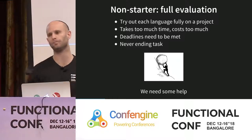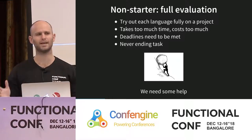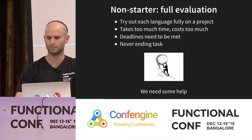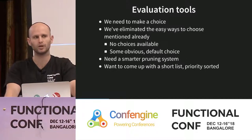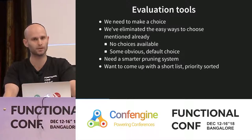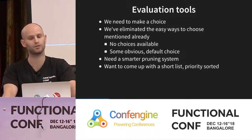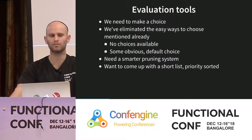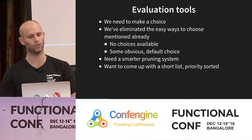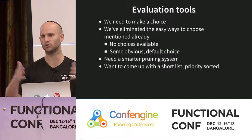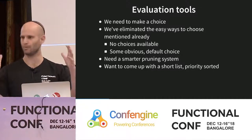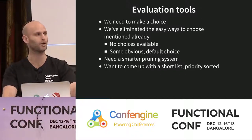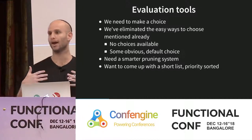So obviously we need some help. What I'm going to describe is the process most of us use today. We use some kind of evaluation tool to help us make that choice. We want to be able to prune that set of 100 or 200 languages down to a manageable list — probably around five languages — and then sort that into some kind of priority queue and start going through them.